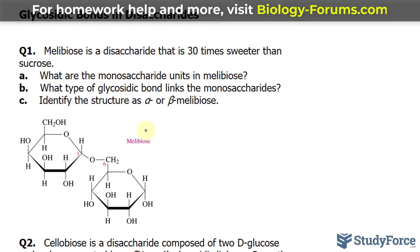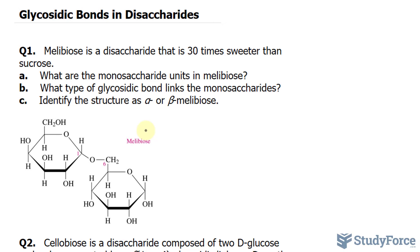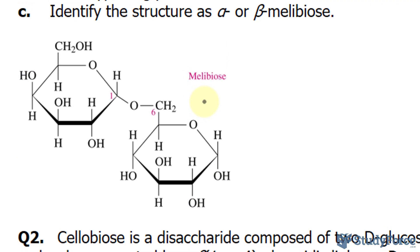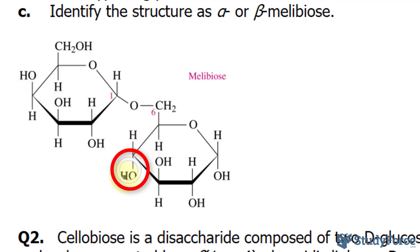The word disaccharide means that we have two monomers coming together, and they're asking in question A what are those two monomers that form this compound. If you take a look below, we'll see the molecule of Molybios. On the left and on the right, you have two monomers that almost look identical. The only difference is that this monomer has the OH at the top of C4, whereas the OH is at the bottom of carbon-4 in the other molecule.